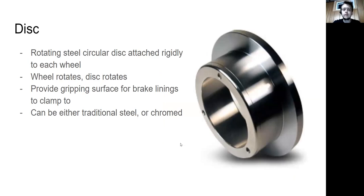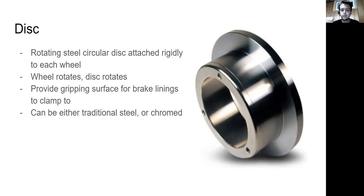The brake disc is a rotating steel circular disc that's attached rigidly to each wheel. As the wheel turns, the disc turns the same amount inside the brake assembly. This is the surface that the brake linings grip onto, providing the friction force that slows down the aircraft.